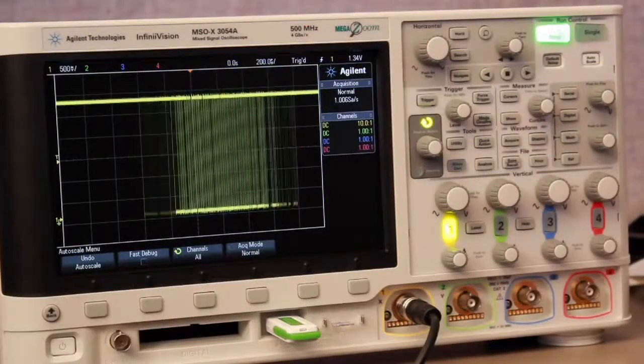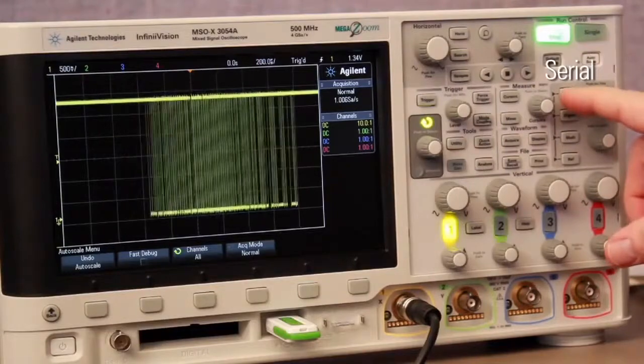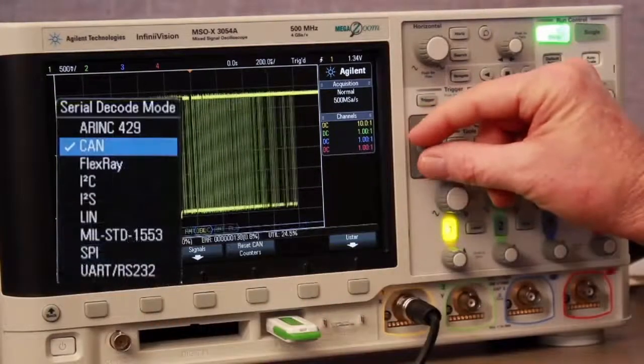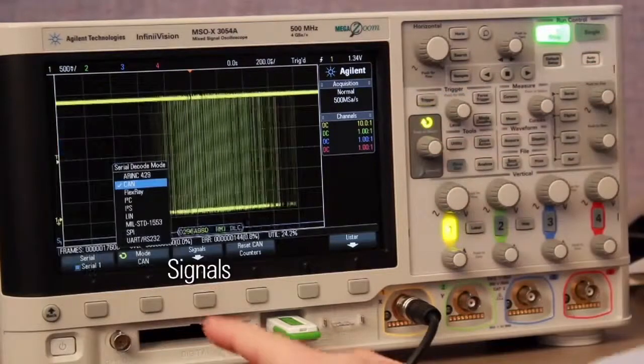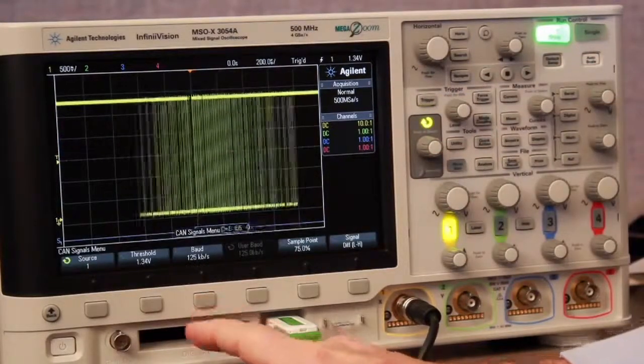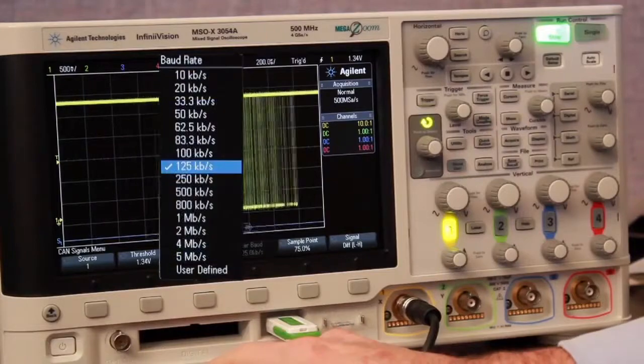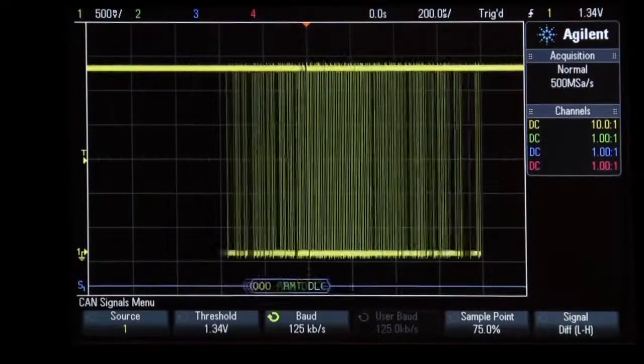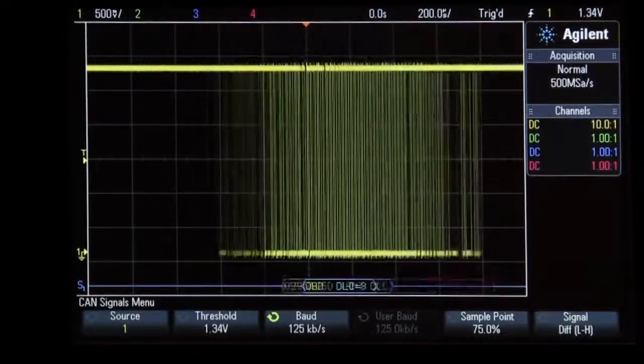To decode this bus, first press the serial front panel key and then select the CAN decode mode. Then press the signal soft key in order to select the appropriate baud rate. The scope is now decoding this bus, but the scope is still just triggering on random rising edges of the signal.